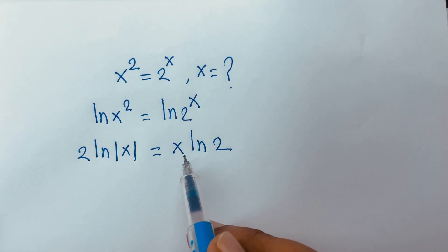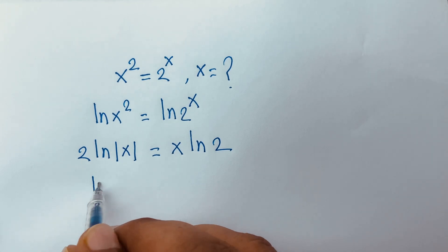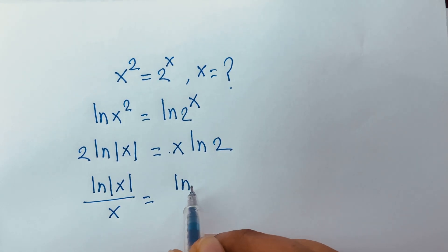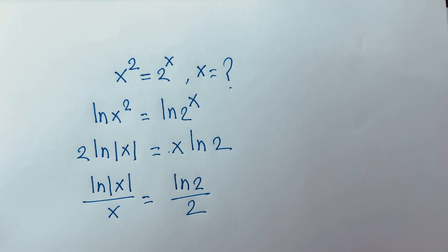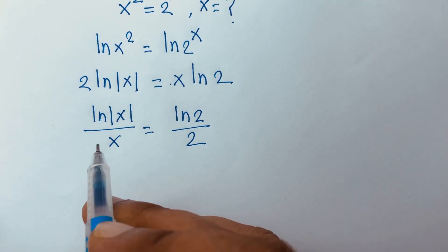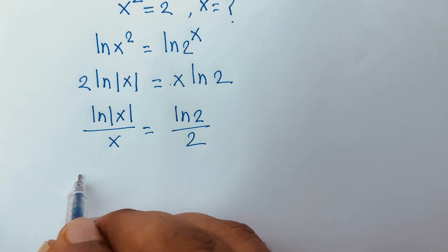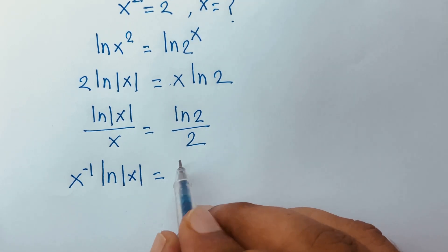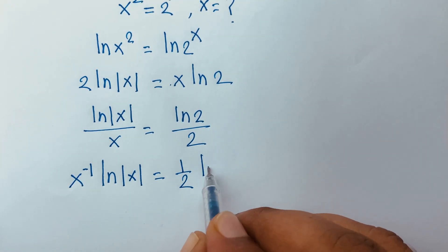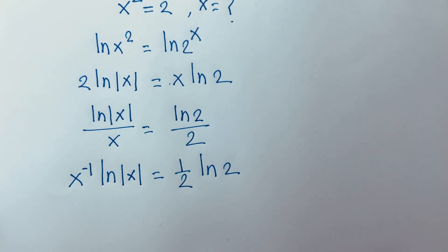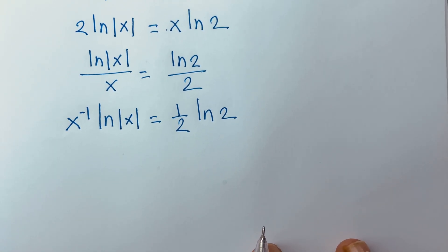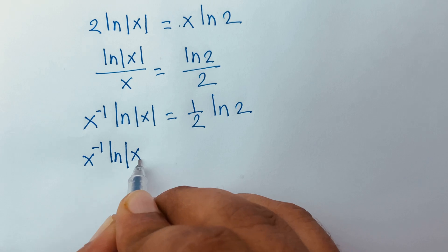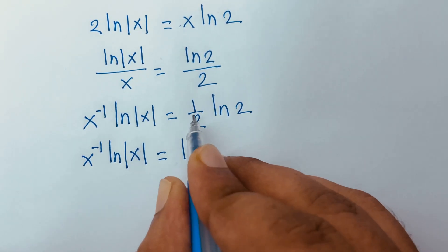Then I move x to this side. So I can say ln(x) over x is equal to ln(2) over 2. Then I can rewrite this as x to the power minus 1 times ln(x) is equal to one-half times ln(2).